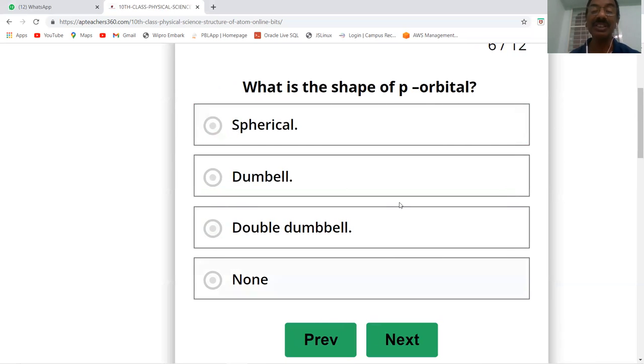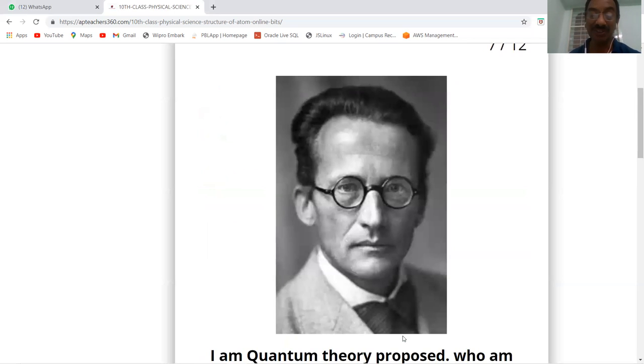You know that P-orbital is dumbbell-shaped. S-orbital is spherical shape, P-orbital is dumbbell-shaped, and D-orbital is double dumbbell-shaped. Next question.